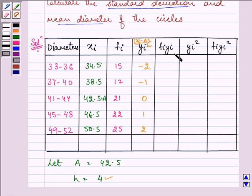Then we need to find out fi yi and that is 15 into minus 2, minus 30, 17 into minus 1, minus 17 and so on. Then square of yi, that is 4, 1, 0,